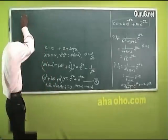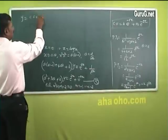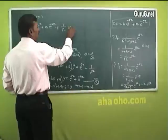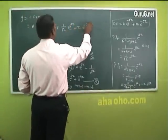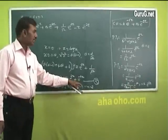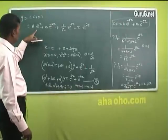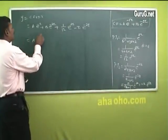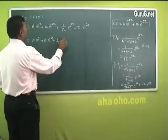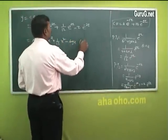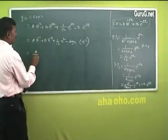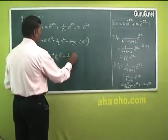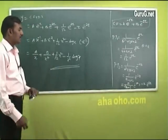Therefore the solution is y = CF + PI = ae⁻ᶻ + be⁻²ᶻ + (1/12)e²ᶻ - ze⁻²ᶻ. This is the solution of equation 2. For equation 1, replace z with log x (since eᶻ = x): y = ax⁻¹ + bx⁻² + (1/12)x² - (log x)x⁻². That is, y = a/x + b/x² + x²/12 - (log x)/x², which is the solution of the given equation.